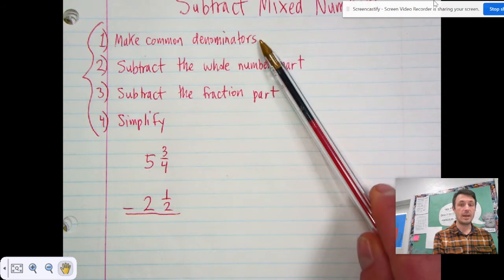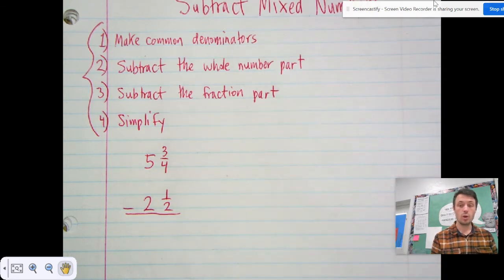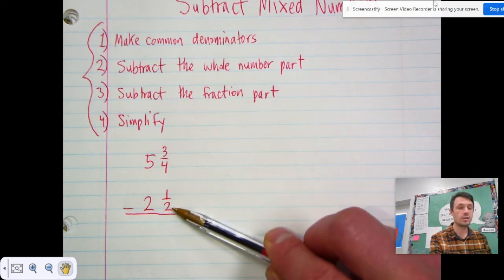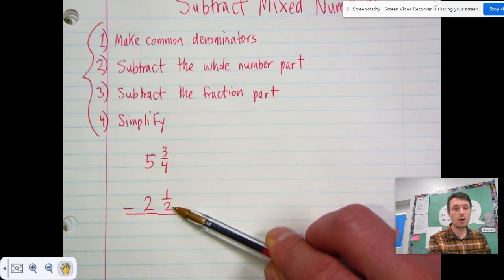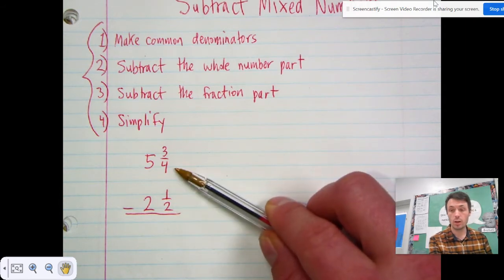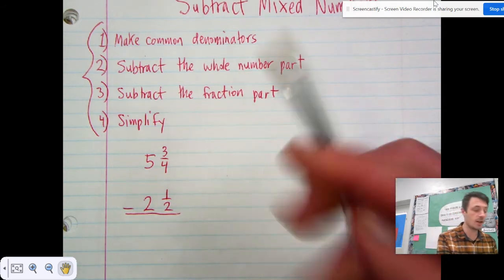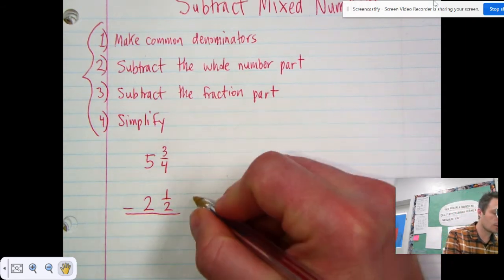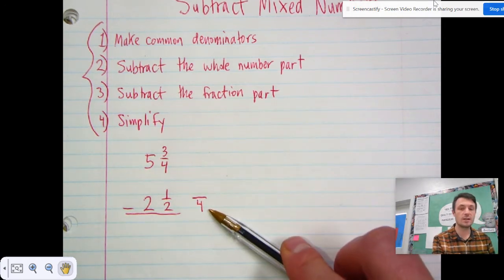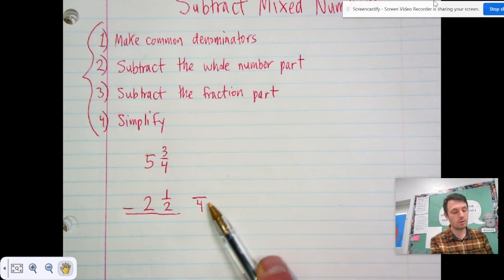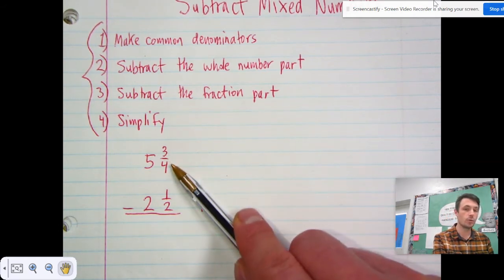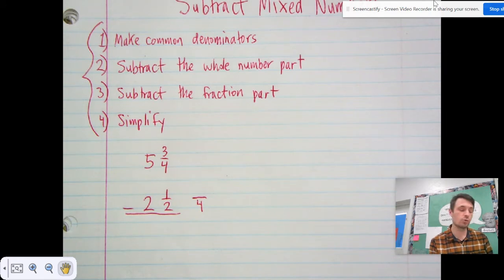Step one is make common denominators. We need to find the LCM for four and two. Many of you can already tell that's four — two can evenly fit into four, which means four is the LCM. So we're going to make a new fraction next to one-half: it's going to have four as a denominator but be equivalent to one-half, making it a like fraction with three-fourths so we can subtract.